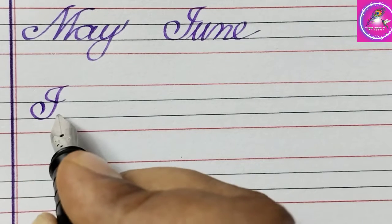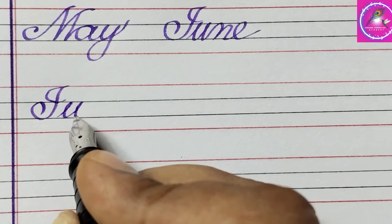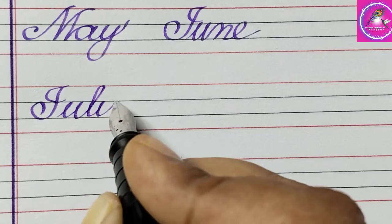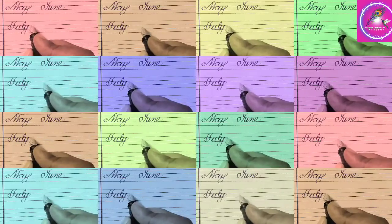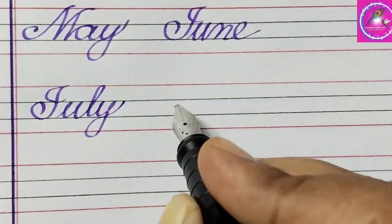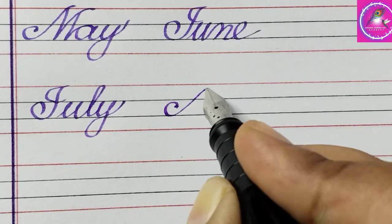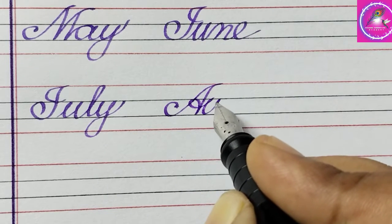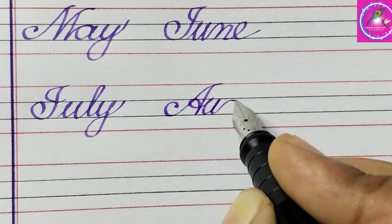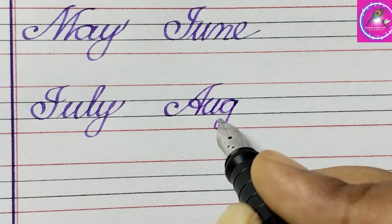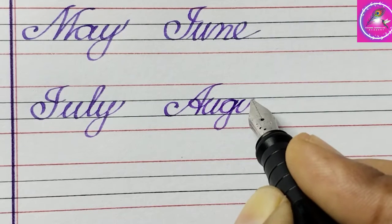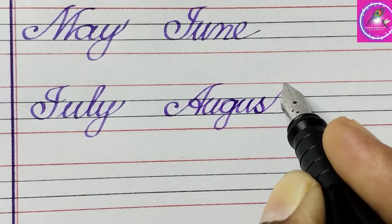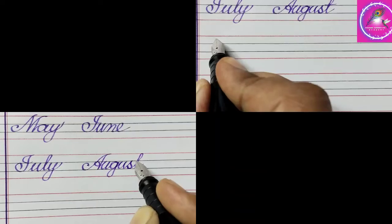July. J, U, L, Y. July. August. A, U, G, U, S, T. August.